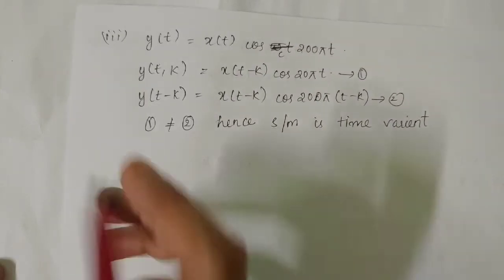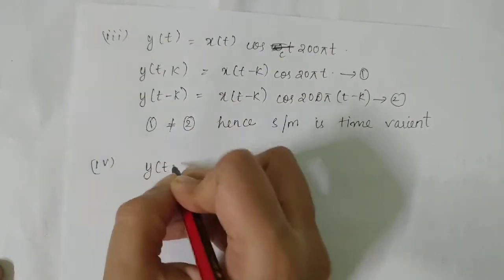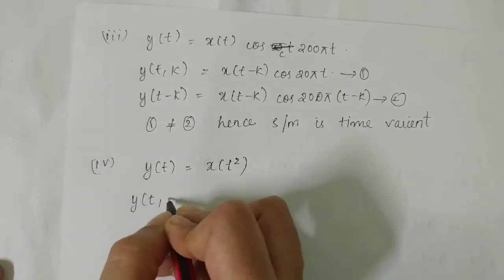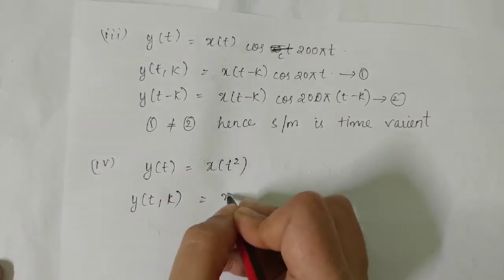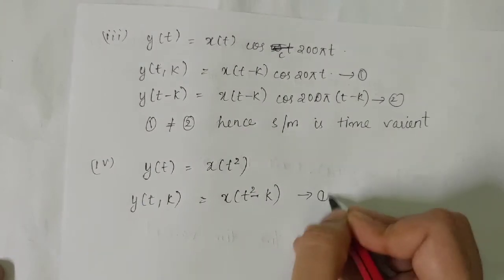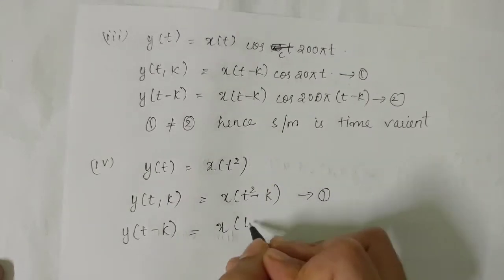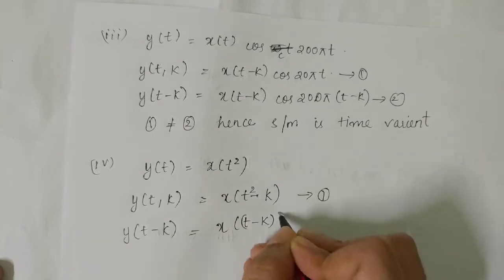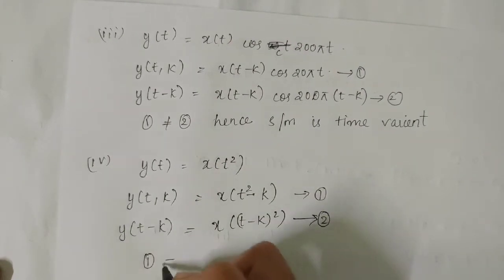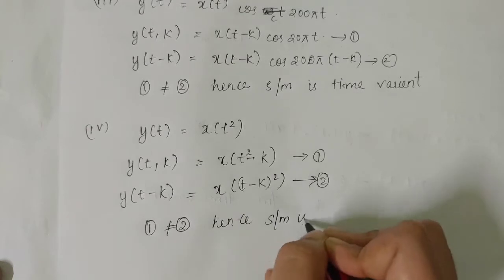The fourth question: y(t) = x(t)². Delaying the input: y(t,k) = x(t−k)², which is the first equation. And y(t−k) = [x(t−k)]², which is the second equation. Since one equals two, hence the system is time invariant.